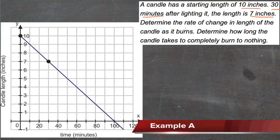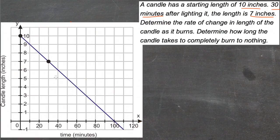So we're supposed to determine the rate of change in the length of the candle as it burns, and then how long it takes the candle to burn to nothing. Over here you'll see that we already have a graph showing what happens to the candle over time.